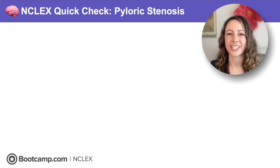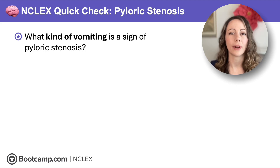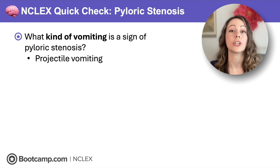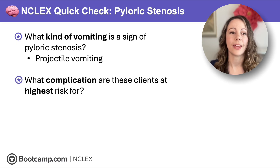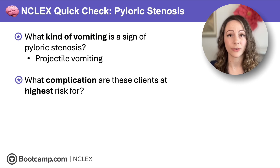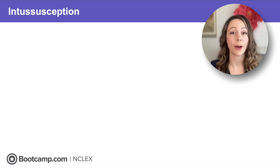NCLEX quick check: what kind of vomiting is a sign of pyloric stenosis? That thickened sphincter causes projectile vomiting in the upper GI tract, so it comes back up and hits the wall. What complication are these clients at highest risk for? Because they're vomiting all the time, we're worried about dehydration.